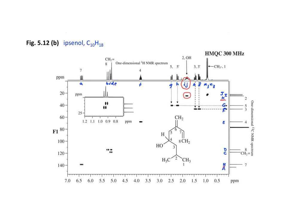However, if we have done a DEPT experiment, we know that H is a methine — meaning a carbon that is bonded to only one proton. Therefore, the second proton might be attached to the oxygen, especially if we have evidence from infrared spectroscopy that the compound contains an alcohol.